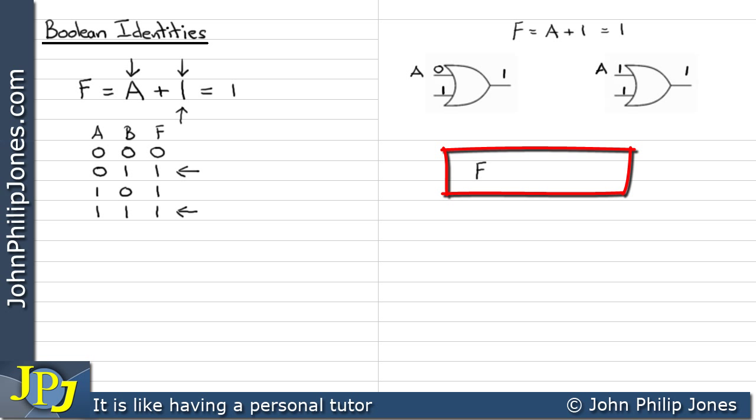So when we see F is A or 1, we should realize that we have at least one 1 present at the input to a 2-input OR gate, and that's sufficient for us to have a 1 at the output.